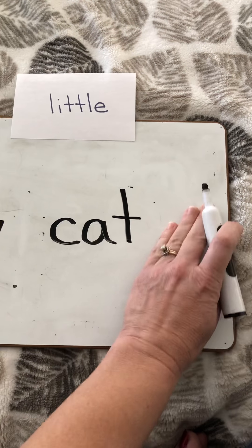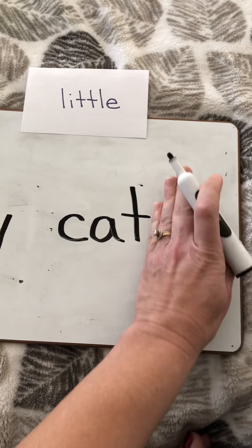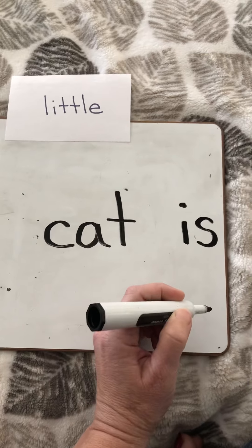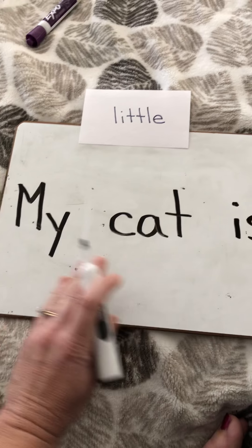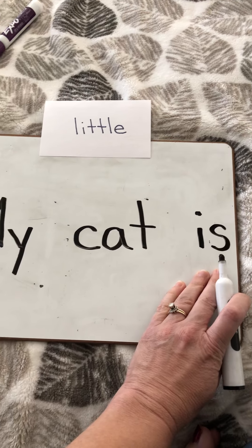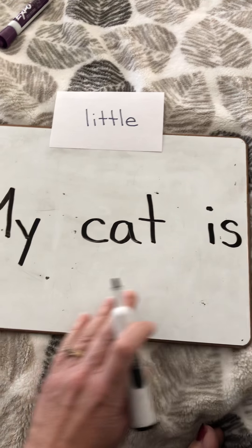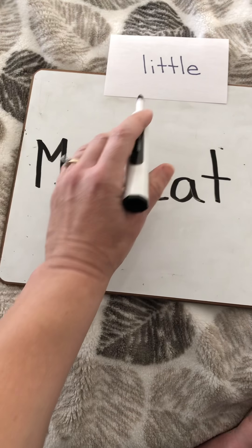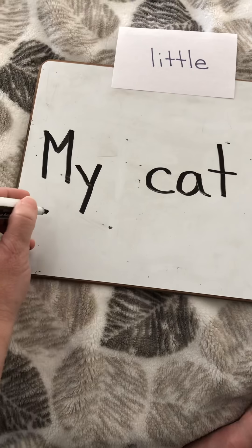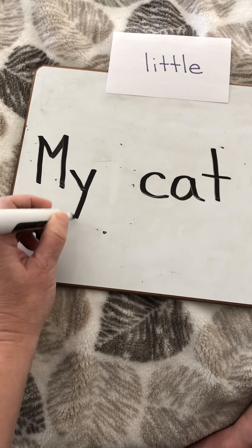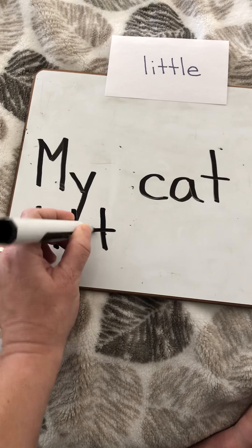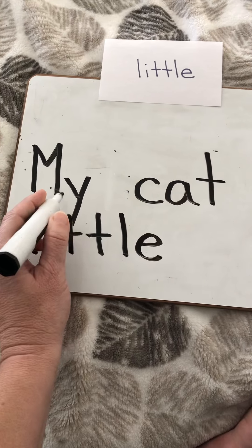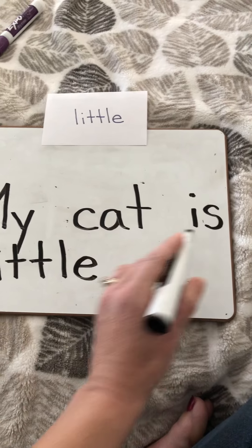Now is is a really small word, so I think I can actually fit it right there. I'm going to make a space and write is: I-S. My cat is. Now little — I definitely can't fit it there, so I have to fit it over here, because even though it's the word little, it's a big word. Little: L-I-T-T-L-E. My cat is little.